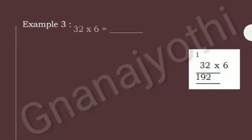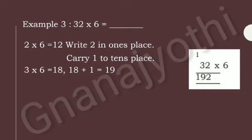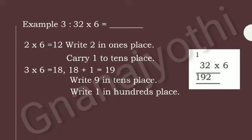Now, look at Example 3: Multiply 32 and 6. First, let us multiply 2 and 6. 2 sixes are 12. Write 2 in the ones place and carry 1 to the tens place. Next, multiply 3 and 6. If we multiply 3 and 6, 3 sixes are 18. So add carry 1 to 18. 18 plus 1 is 19. Then write 9 in the tens place and write 1 in the hundreds place. Therefore, if we multiply 32 into 6, we get 192.